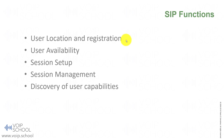SIP has five functions. The first is user location and registration — endpoints notify the servers of their current location. The second is user availability — the location is saved in a database and the server checks if the user is available and whether the registration has expired. The third is session setup, where INVITE is the method responsible for establishing a session. We also have re-INVITE, UPDATE, or BYE for session management — you can change the codec, add or remove video, and fully manage the session mid-call.